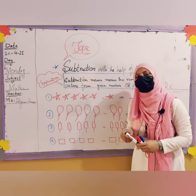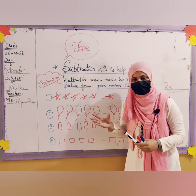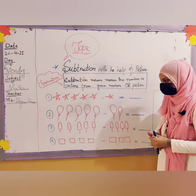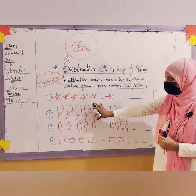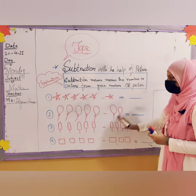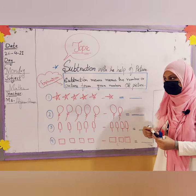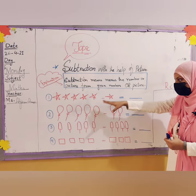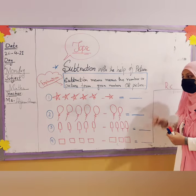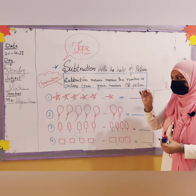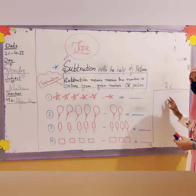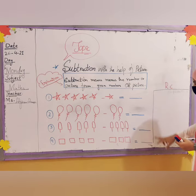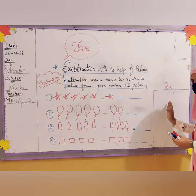First we will count and then we will minus that thing. We will draw some pictures for the subtraction, count them, and write the answer by drawing the remaining pictures. For rough work — for the minus calculations — on your copy page you have to make a rough column like this.